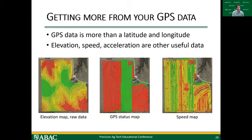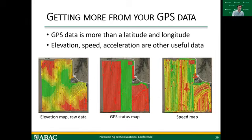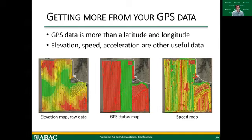The elevation map shows individual points — you can start to see trends where red is lower area and green is higher area. The GPS status map is useful if you're seeing anomalies in your data or having issues with guidance; this is being recorded in the background and can be very useful. The speed map shows where we speed up and slow down, which may give good insights into field conditions and operator fatigue — different analyses we can pull value out of from GPS data that we didn't know was there before.